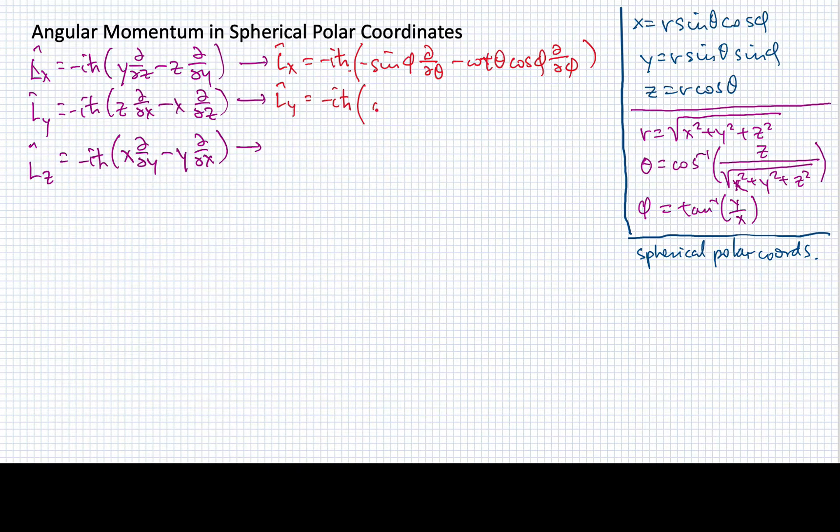The simplest of all of these is the Lz component. Because it's going to simply be minus i h-bar d/dφ. All right, it's particularly simple and this actually is one of the things that leads us to use this as a special component of angular momentum that we track quite often.